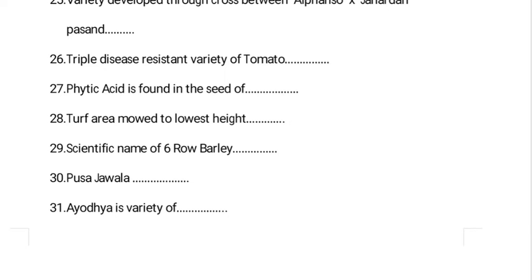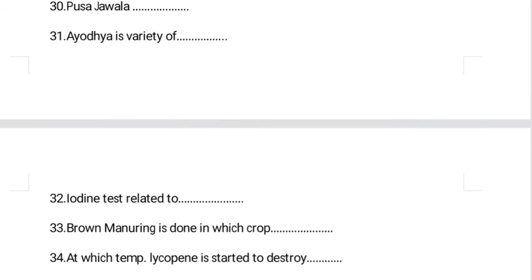Pusa Jwala is a variety of chili that is tolerant to thrips, mites, and aphids. Ayodhya is a variety of — right answer is Bel. Ayodhya, Gonda, Mirzapuri, and Kagli are all varieties of Bel. The iodine test is related to maturity indices, indicating the presence of starch.